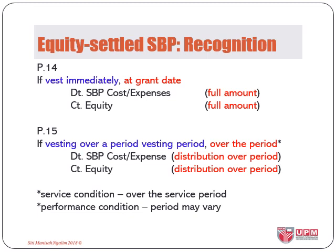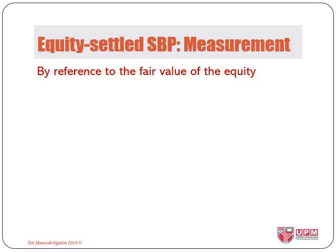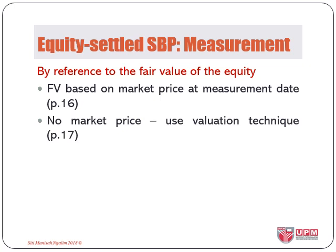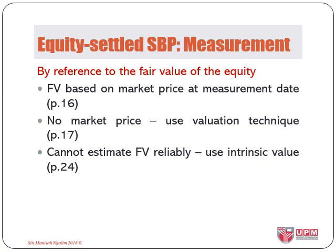If the scheme vests over a period, for example, awarding employees for their performance or services in the future, over the vesting period we shall debit SBP costs or expense and credit equity with the value distributed throughout the period. The full amount will be achieved only at the end of the vesting period. The value to record shall refer to the fair value of the equity instruments granted based on market price and measurement date. If no market price exists, we use a valuation technique, and if we still cannot estimate fair value reliably, we can use the intrinsic value.